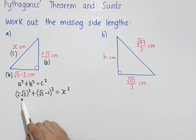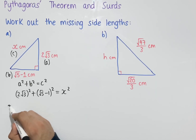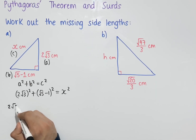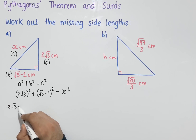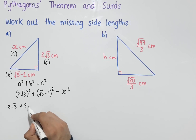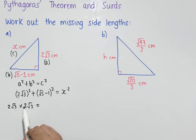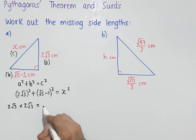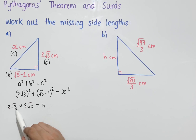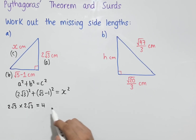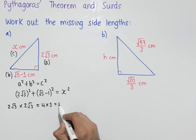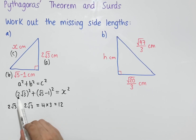Expanding the brackets: (2√3)² is the same as 2√3 × 2√3. When we multiply surds, the numbers in front multiply together: 2 × 2 gives 4, and √3 × √3 gives 3. So we have 4 × 3 = 12. Therefore (2√3)² = 12.